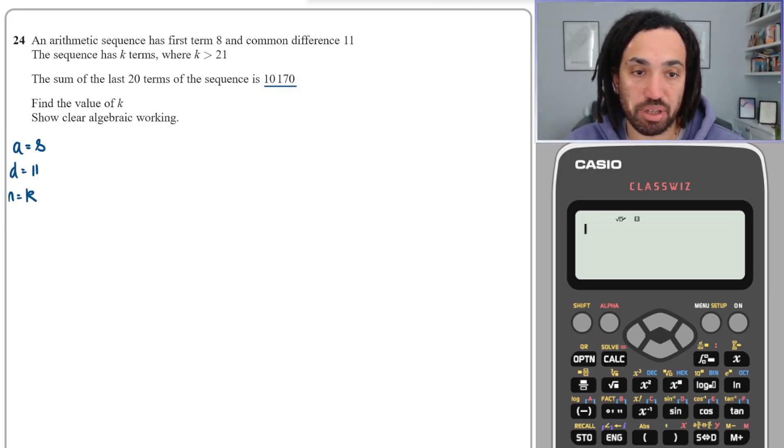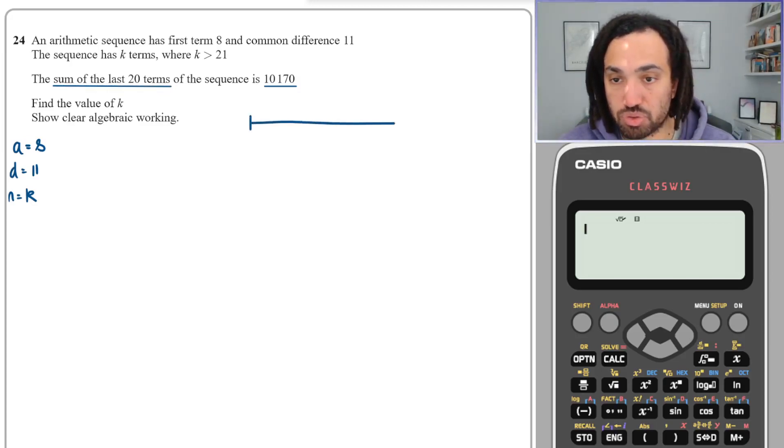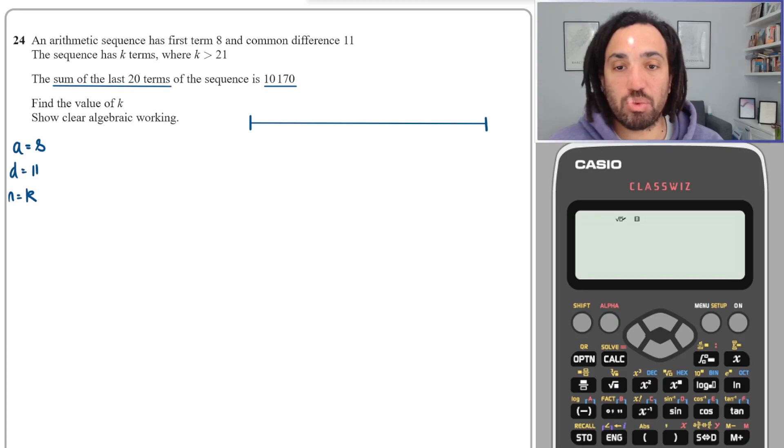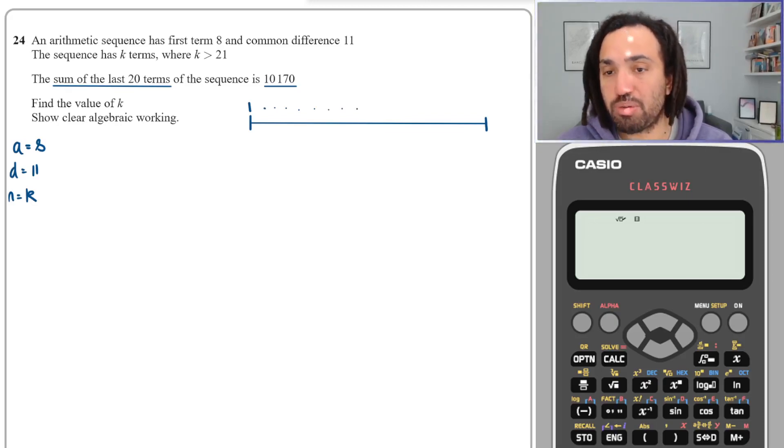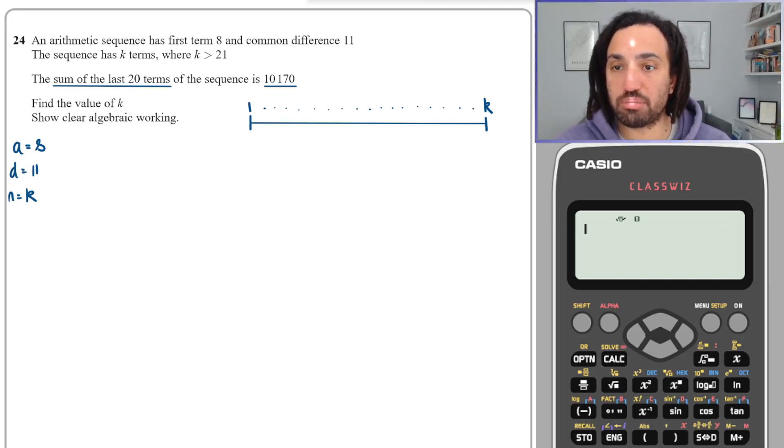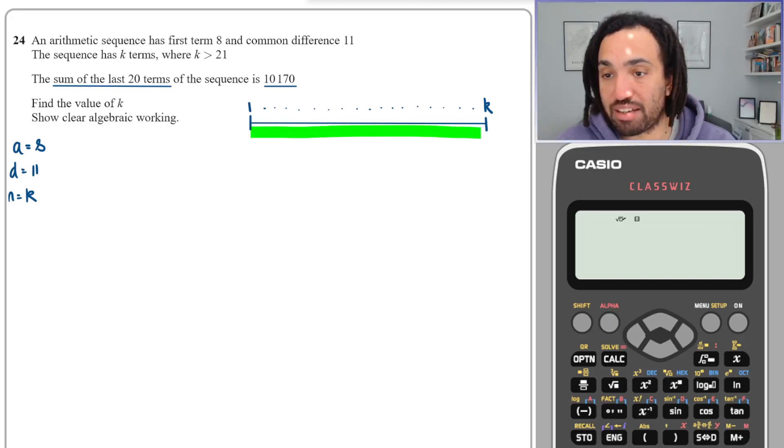Very tricky because they're asking for the sum of the last 20 terms. The best way to visualize what's happening here is to draw a number line and imagine all of your terms. We're going to start off when n equals 1, that will be the first term, and then we'll have n equals 2, 3, 4, 5, 6, all the terms up to the last term which will be n equals k. We can do a formula to work out all these terms. In fact, you're given this formula in your formula booklet, and that will give me all of the terms added together up to k.